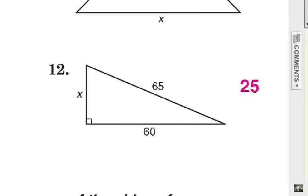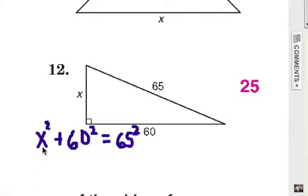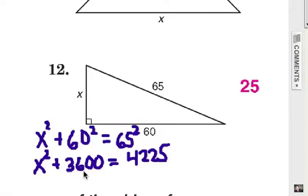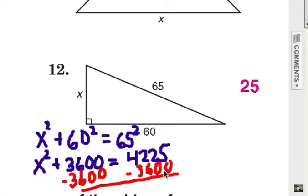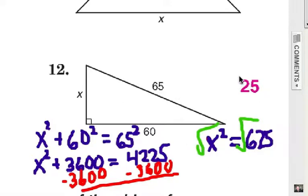And finally number 12. X is a leg, 65 is the hypotenuse and 60 is the other leg. We substitute these into the Pythagorean theorem and get X squared plus 60 squared equals 65 squared. So X squared plus 3600 equals 4225. Of course we need to subtract 3600 from each side. That will give us 625. Take the square root of each side. And now, of course, our answer would be 25.